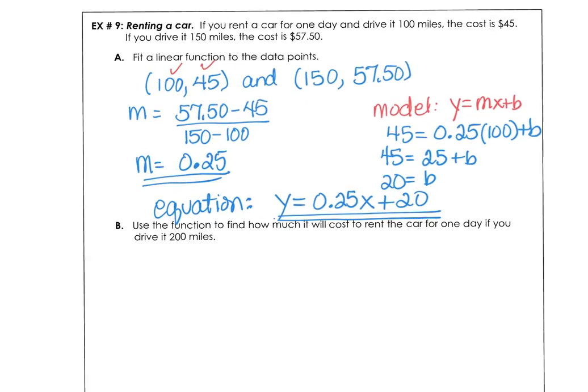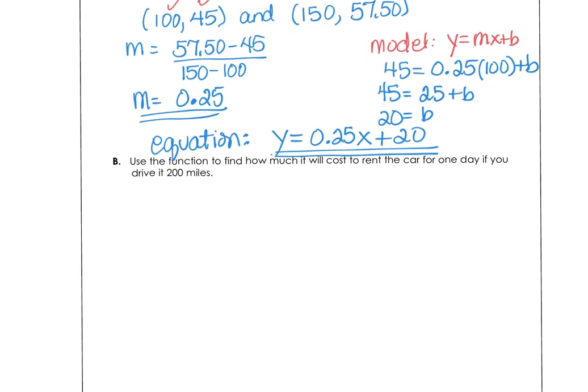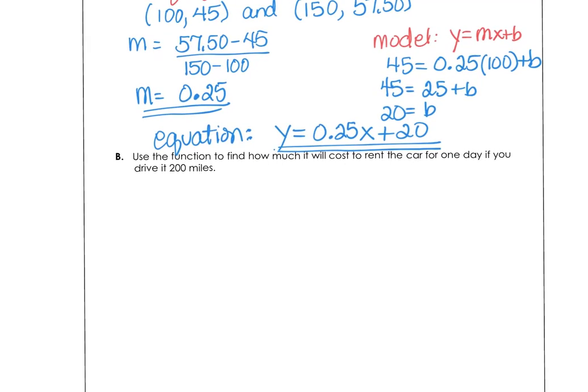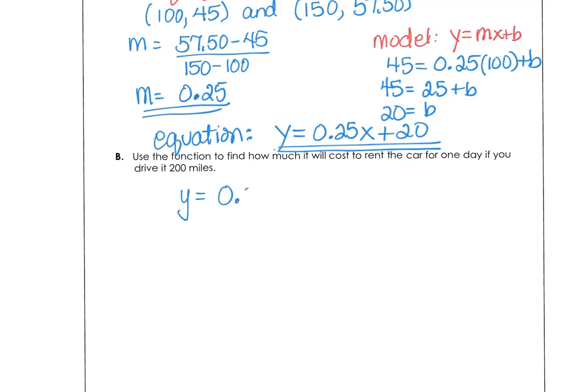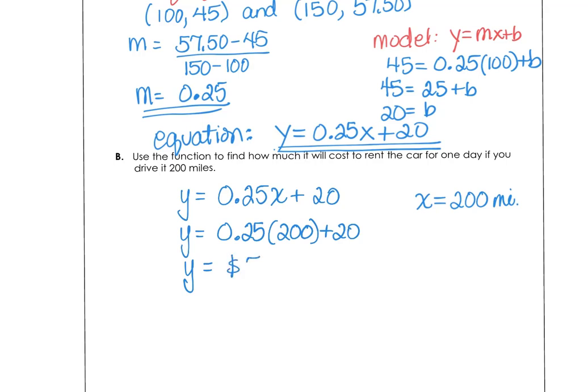And then in part b, our final portion is use the function to find out how much it will cost for you to rent the car for one day if you drive it 200 miles. So if our model is y equals 0.25x plus 20 and we're going to drive the car x miles or 200 miles, then we want to substitute 200 in place of our x and 200 times 0.25. That's 50 plus 20. So that would cost you $70 to rent the car for one day if you drive it 200 miles. Thanks for joining me. That's the end of lesson one in chapter two.